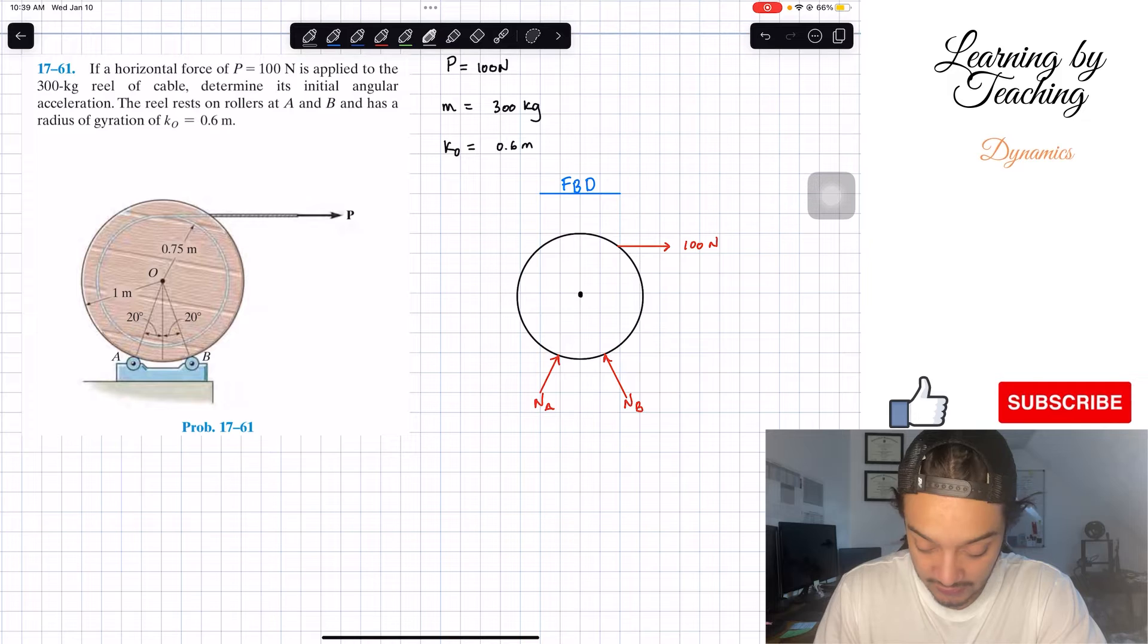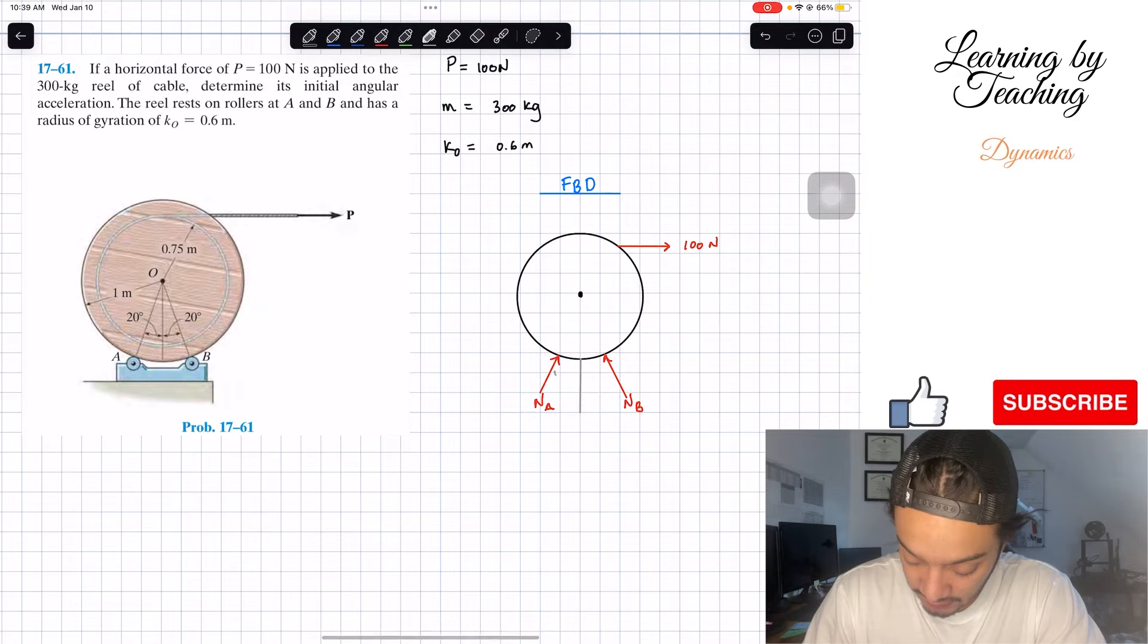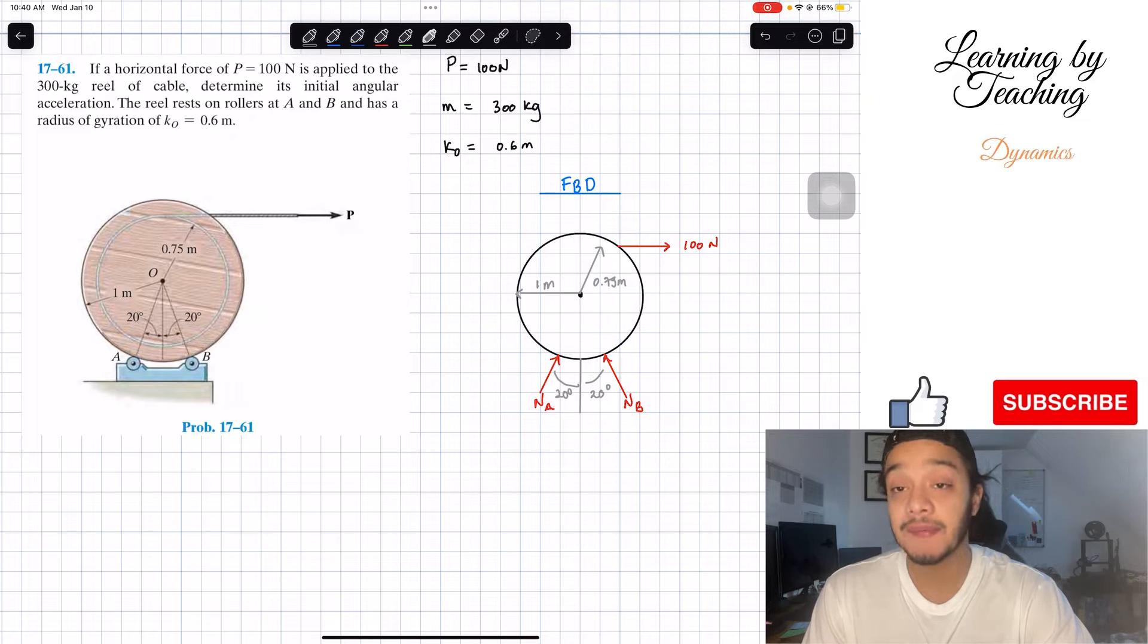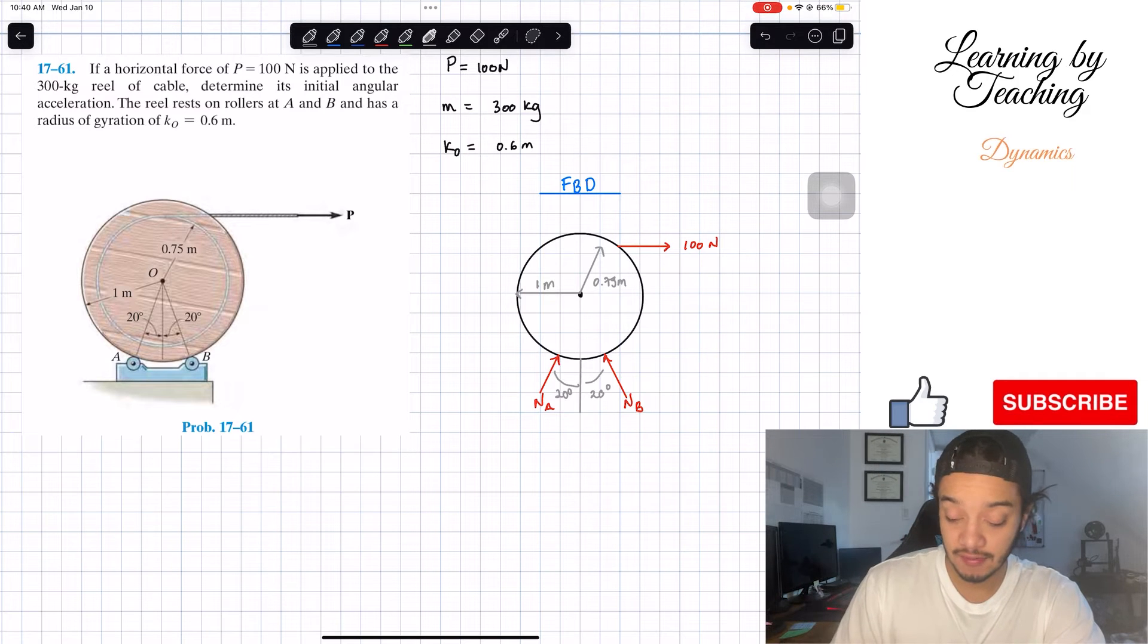We are told that these two normal forces are 20 degrees with respect to the vertical axis individually. The distance from here to our rope is 0.75 meters, and the actual radius of our rail is equal to 1 meter. I believe that's all for our free body diagram.